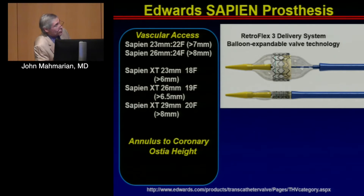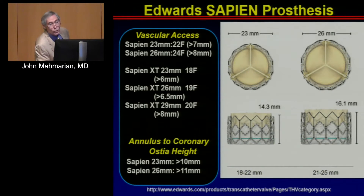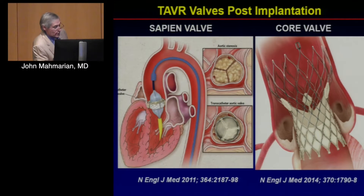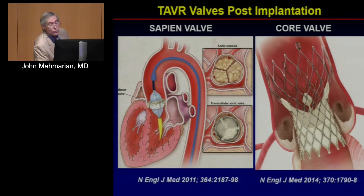Very important for the Sapien valve specifically is the annulus-to-coronary ostia height, which is not an issue with the CoreValve. You can see how the coronary ostia are spared with the CoreValve, whereas with the Sapien valve you really need to worry about coronary ostia. These valves are quite different in terms of placement approach and how CT is helpful in characterizing how to use them.